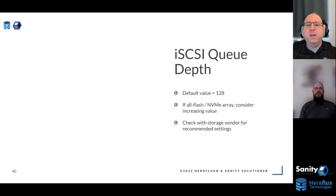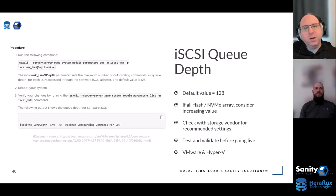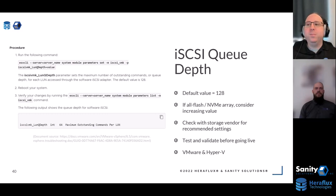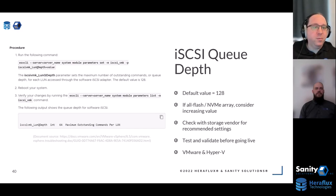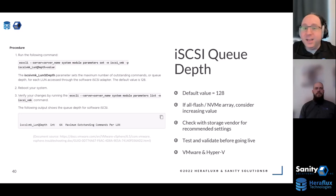If you're not on Fibre Channel and are running iSCSI, this is actually one of the reasons why iSCSI outperforms Fibre by default — because the default queue depth is 128. In most environments that may be acceptable, but if you're on a really good all-flash array or an NVMe array, consider bumping this value up. Check with your storage vendor to make sure everything is okay, but often you can bump this up to 192 or 256, getting more concurrent I/O to the SAN — and therefore better performance and lower latency.